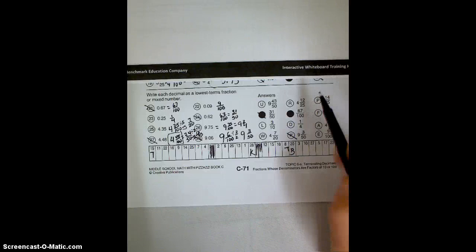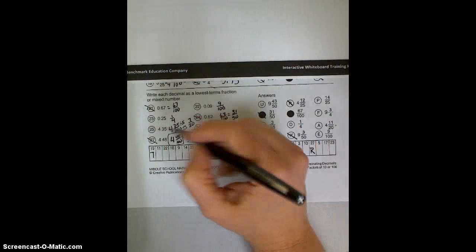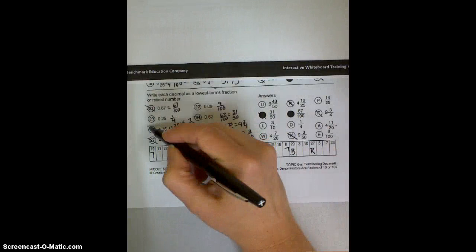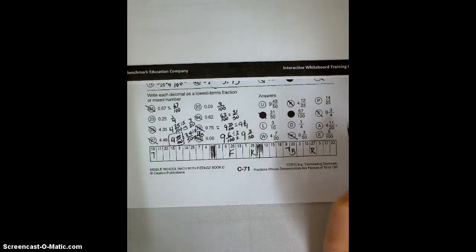We'll find out what our message is if we keep going. 26 is 9 and 3 fourths. 26 is F. 25 is 4 and 7 twentieths. There it is. It's a W. So 25 is a W.